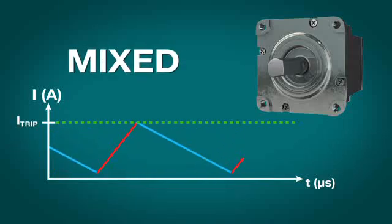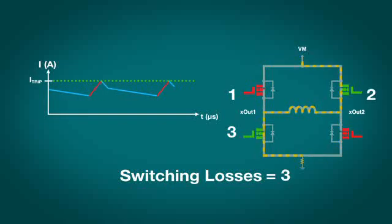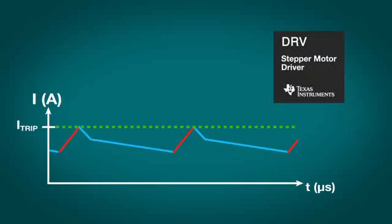The third option, mixed decay, is a good balance between purely fast or slow decay. While there are more switching losses and a larger ripple than pure slow decay, mixed decay will keep the current regulated more efficiently than strictly fast decay.